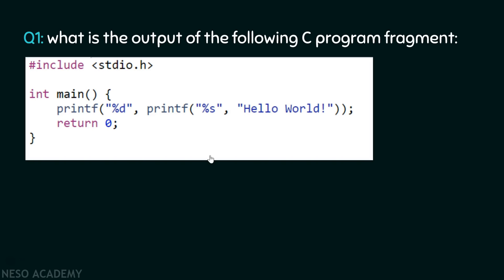What is the output of the following C program fragment? Here you can see I have written a printf function with two arguments. One is %d — as we all know, this is a format specifier used to print an integer — and the second argument is another printf function. In the argument position where we usually write a variable or integer value, I have written a printf function instead.